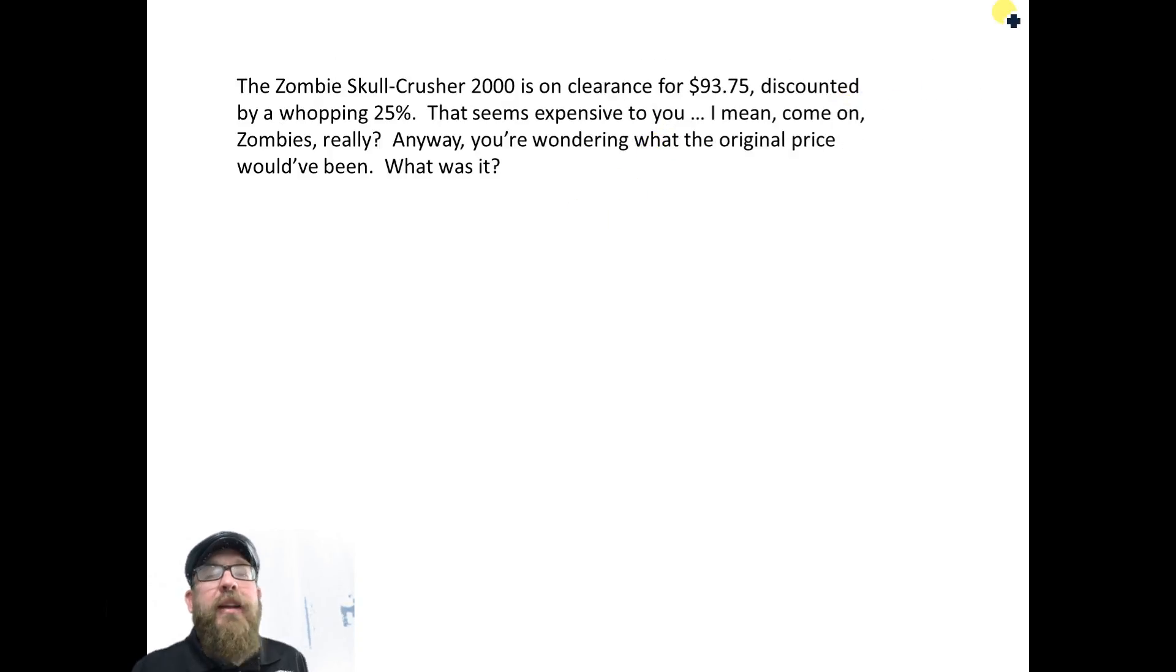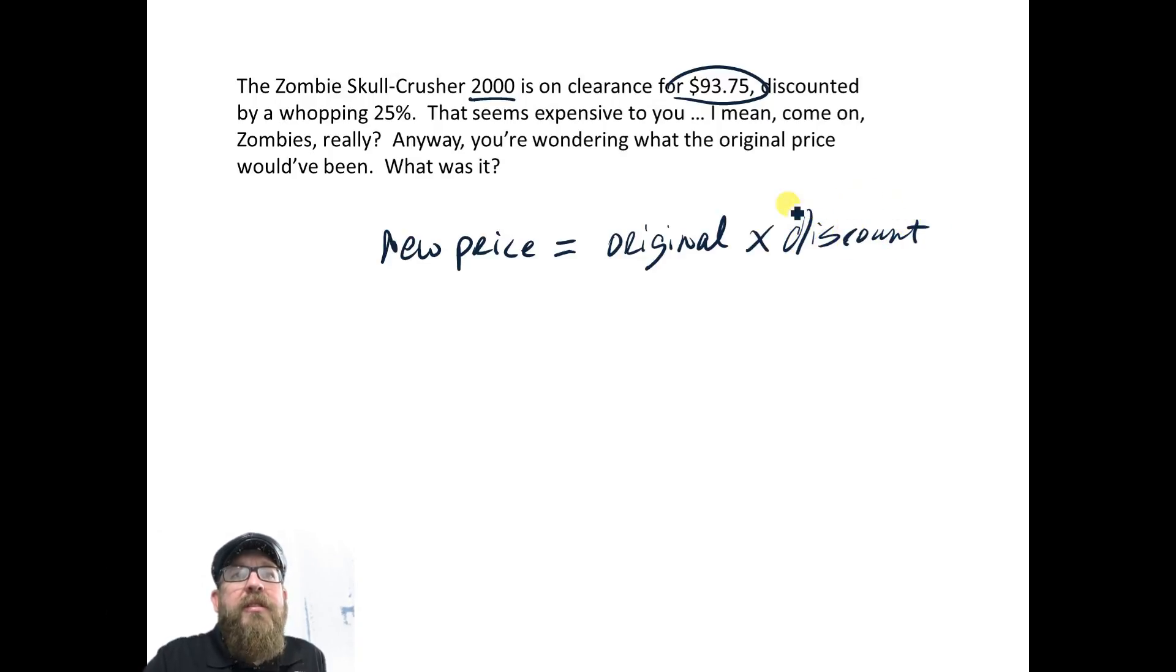Next one. So we got a zombie skull crusher 2000. It's a bat. It's on clearance for $93.75, and it's been discounted by 25%. So the question is, what did it cost before the discount? So here's how we figure this out. We got new price, and the way you figure out your new price is you've got your original price times the discount, the percentage discount. So this is the relationship between the new price and the old price. So let's go ahead and plug these numbers in. The new price was $93.75. We don't know the original price. That's what we've got to figure out. And the discount, well you see how the discount is 25%? That means that you're spending 75%. If you save 25, you're spending 75.